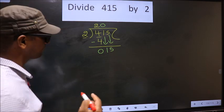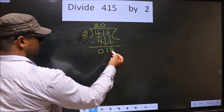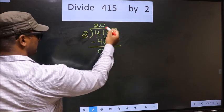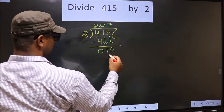Next. So here 15, here 2. A number close to 15 in the 2 table is 2 times 7, 14.